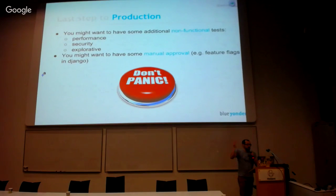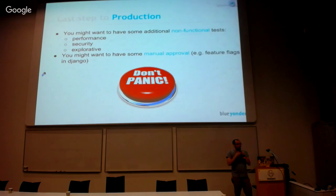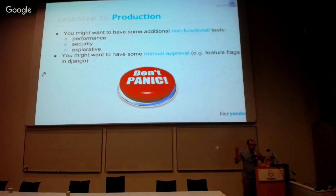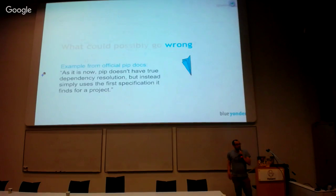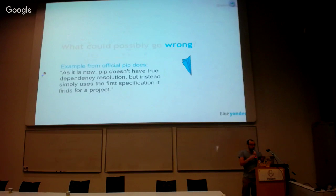Then the last step: don't panic. Now it goes to production, but of course you want to have maybe some more functional and non-functional tests like performance and security, and maybe even some manual approval. For example, in the Django package there are feature flags where you can turn features on and off.